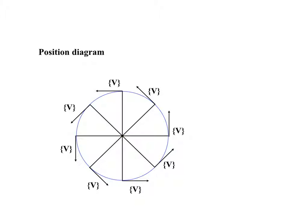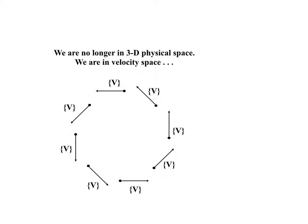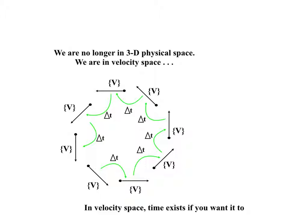Anyway, now we have a sample consisting of 8 velocity vectors in physical space. Let's take them out of physical space and put them in velocity space. Velocity space is a space where you can move vectors around at will, as long as you don't change their direction or magnitude. In velocity space, time exists if you want it to. So here we see that there is a sequence to the vectors. They transform into one another after a period of time which we decided to call delta t.